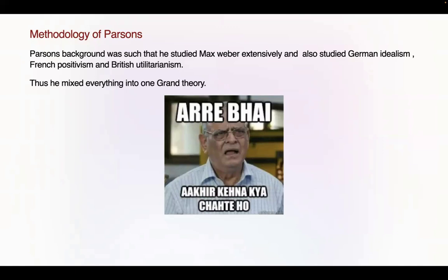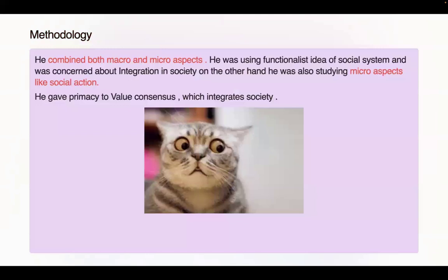He studied everything and made our life miserable — he mixed everything into a grand theory, a grand salad that confused every aspirant reading it, because he's encapsulating everything he studied into one capsule. He combined both micro and macro aspects. He's a functionalist, concerned about integration in a social system through values. But he also studied a micro concept — social action — something studied by Max Weber and micro sociologists. So again, he's confusing us; our face is just like that super confused cat.